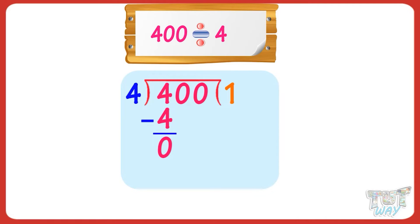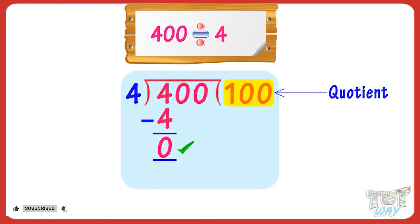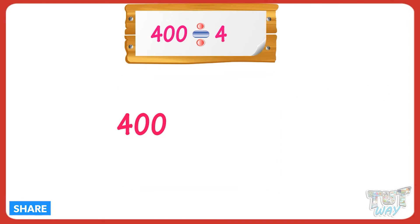Now, the digits left in the dividend are only 0. In such a case where the digit or digits left in the dividend are only 0s, we can just append them to the quotient. Our quotient is 100 and the division is complete. So, 400 divided by 4 is 100.